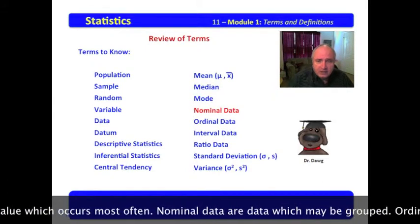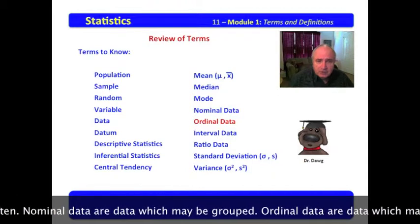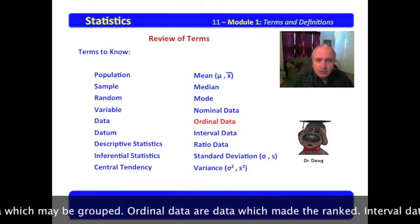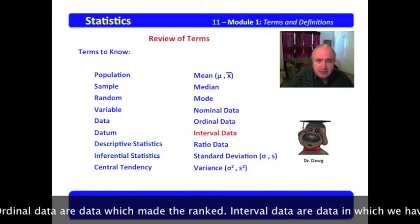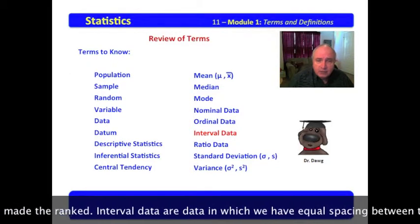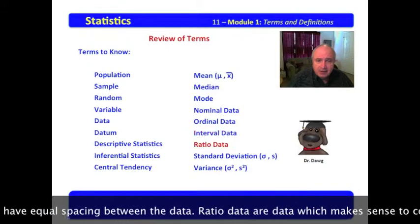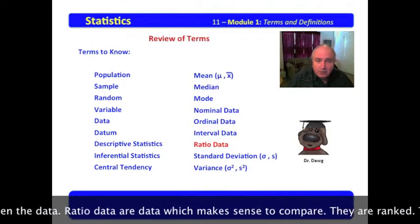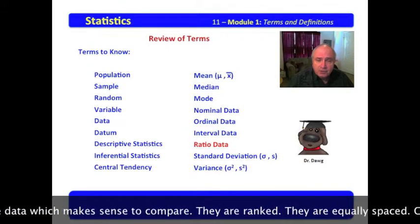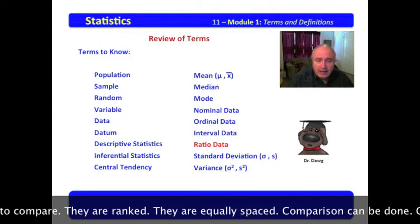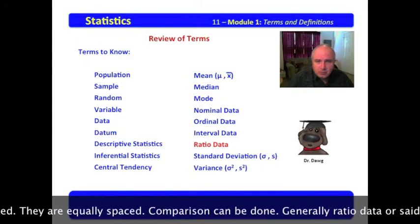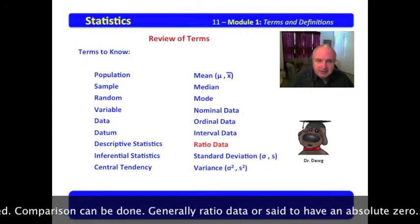Nominal data are data which may be grouped. Ordinal data are data which may be ranked. Interval data are data which have equal spacings between the data. Ratio data are data which makes sense to compare. They are ranked, they are equally spaced, but comparison can be done.